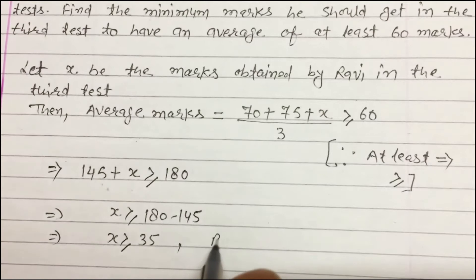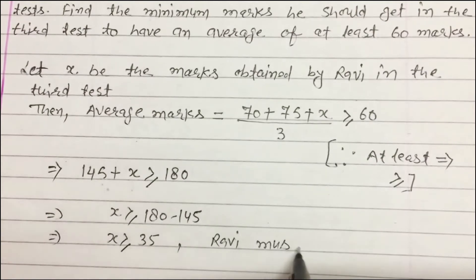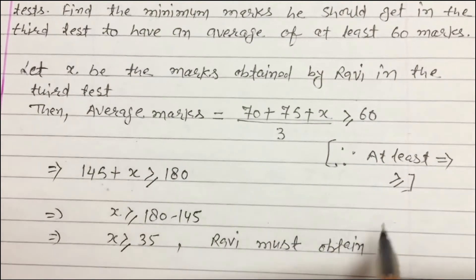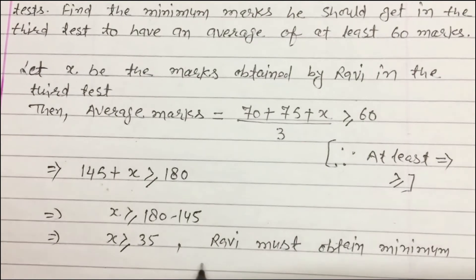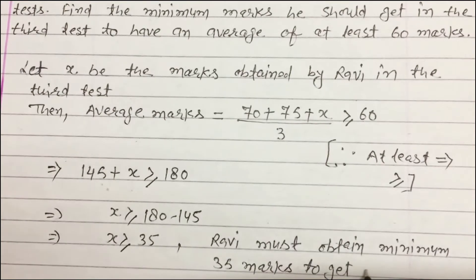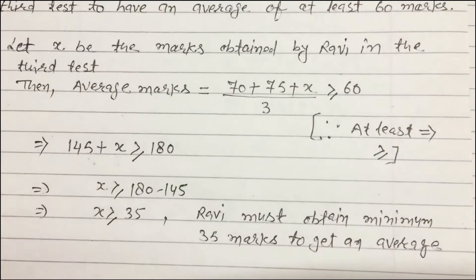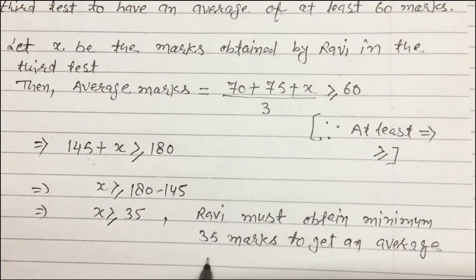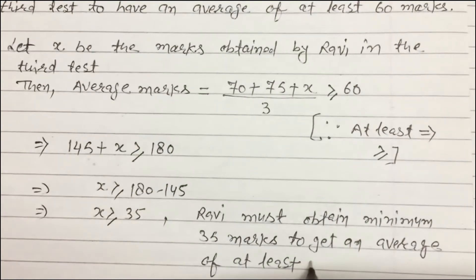Rabbi must obtain a minimum of 35 marks to get an average of at least 60 marks.